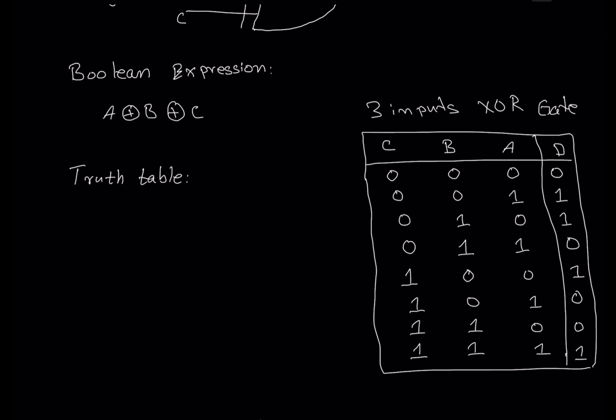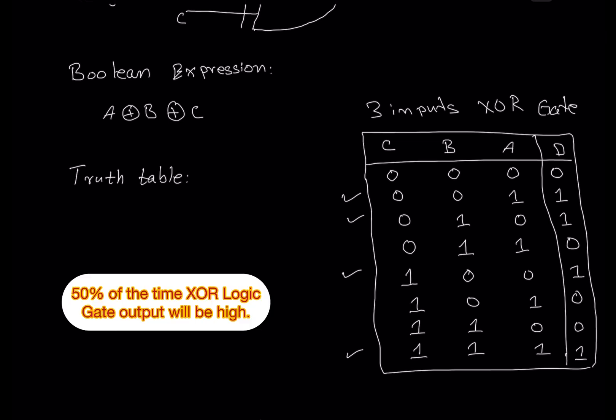The outputs are only high when you have an odd number of inputs high. How many odd-number cases do we have? We have four: one, one, one, and one — so four out of eight possibilities, meaning about 50% of the time the XOR gate will be high.